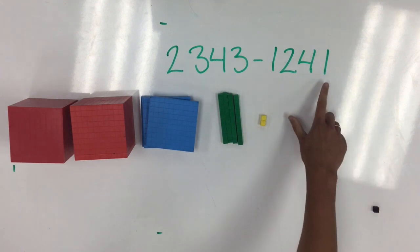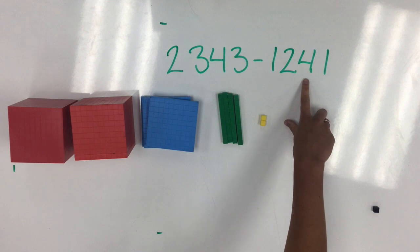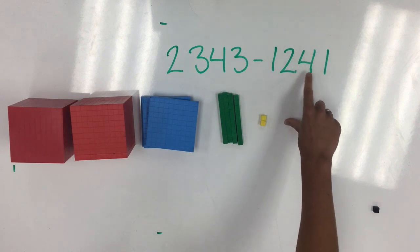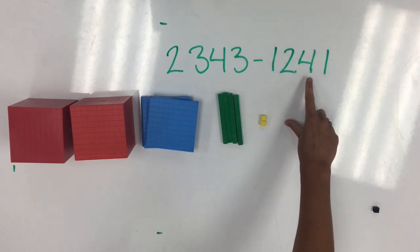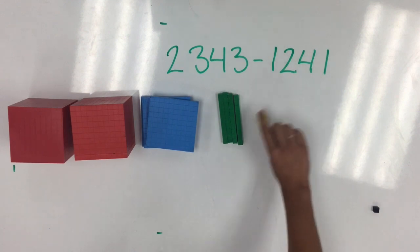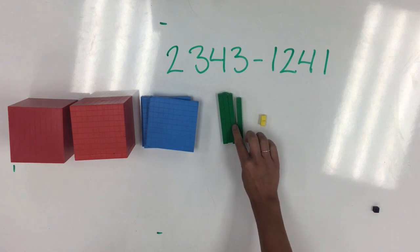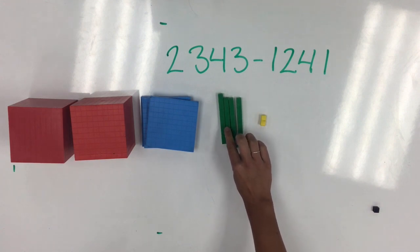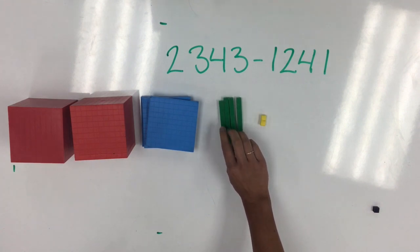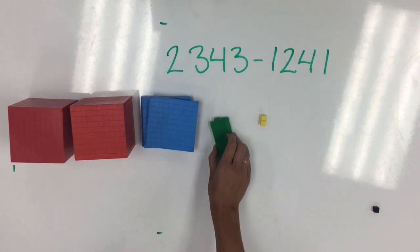Next, we move to the tens place. Here, we have four in the tens place, so I'm going to take away one, two, three, four from my original number.